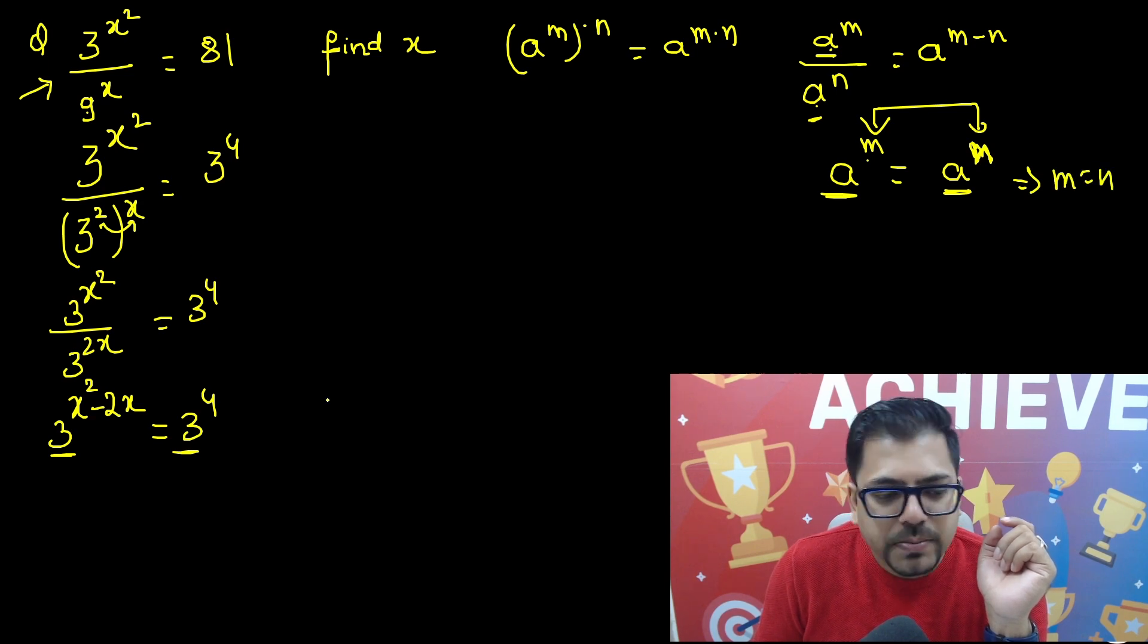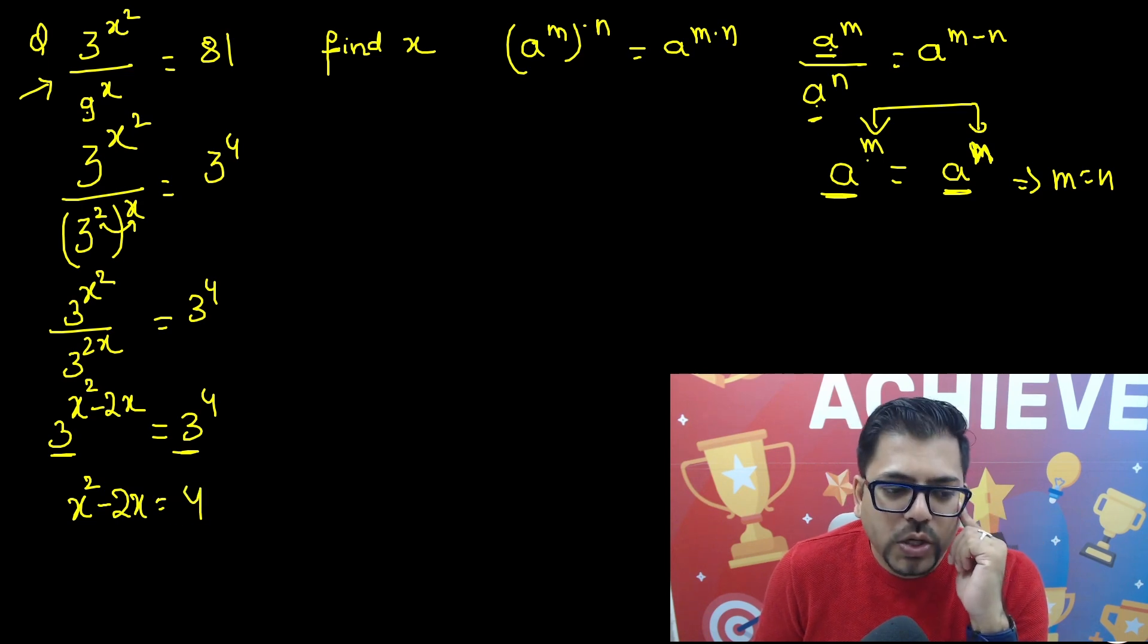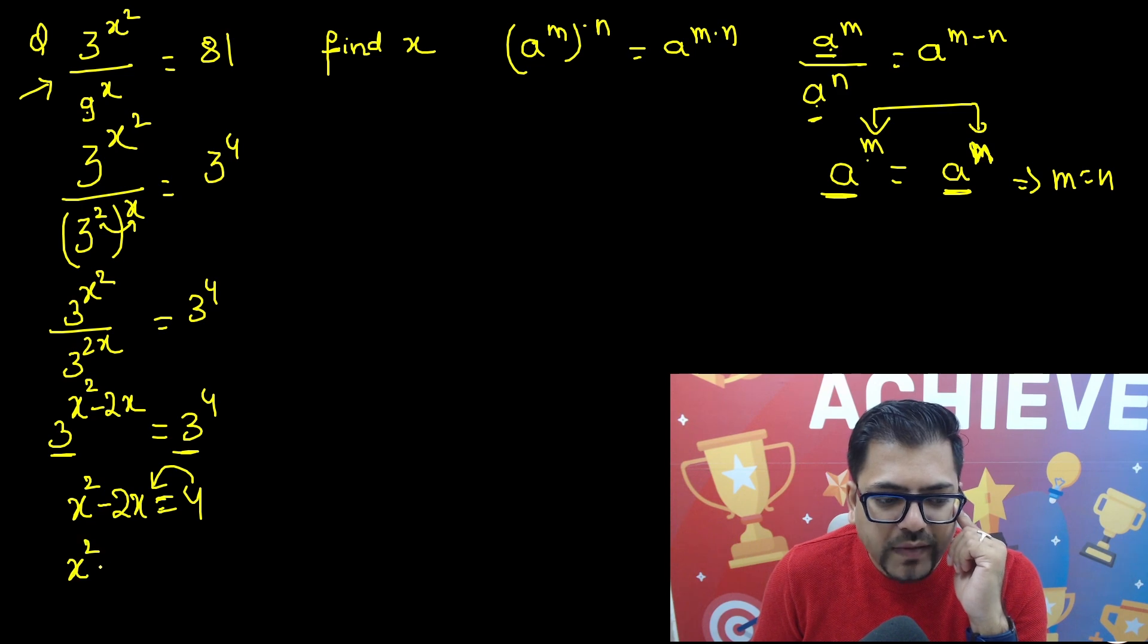So from here you'll have x squared minus 2x is equals to 4. This means 4 has to be brought to this side. You'll have x squared minus 2x minus 4 equals to 0.